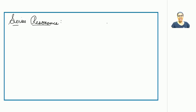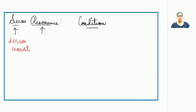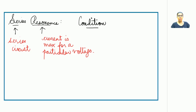Good evening everyone. In today's lecture we are going to discuss the concept of series resonance. There are two words: 'series' implies it should be a series circuit, and 'resonance' implies that for any given circuit the current is maximum for a particular voltage. Together they make the condition of series resonance — series refers to a series circuit, and resonance refers to the condition in which current is maximum for a particular voltage.